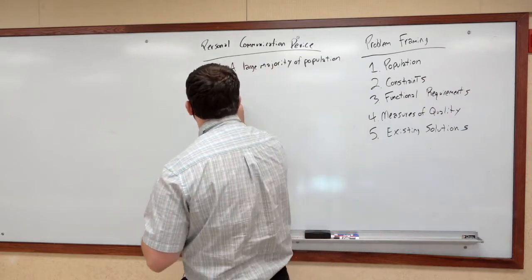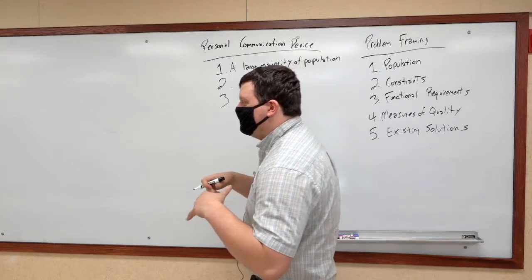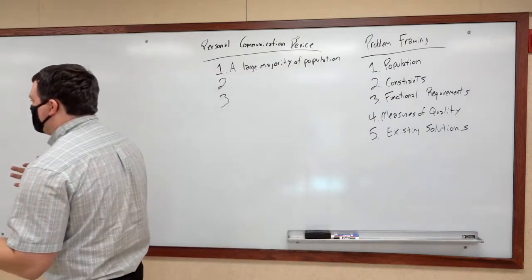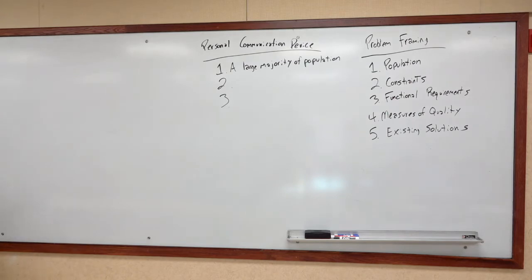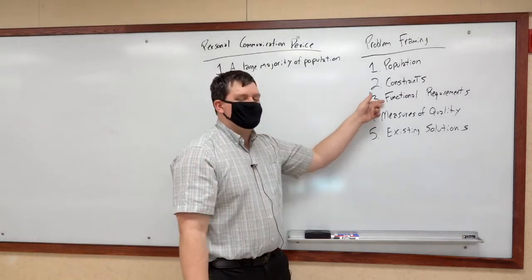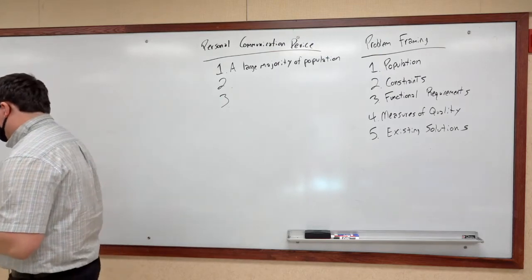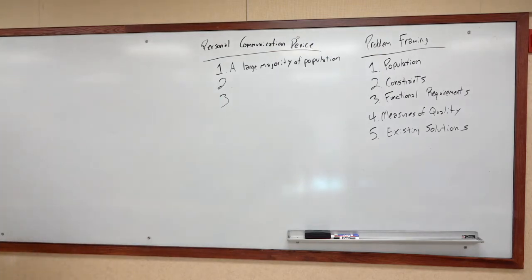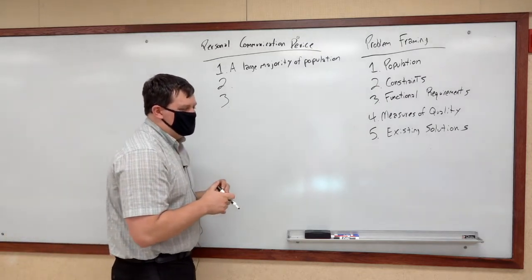Step two: identifying constraints. And we're going to do step three at the same time — constraints and functional requirements. A constraint is something that has to be true in order for it to be a personal communicator. Similarly, a functional requirement is something that the device has to do in order to be a personal communicator.